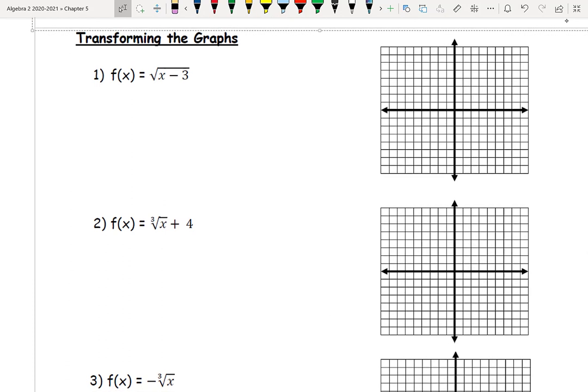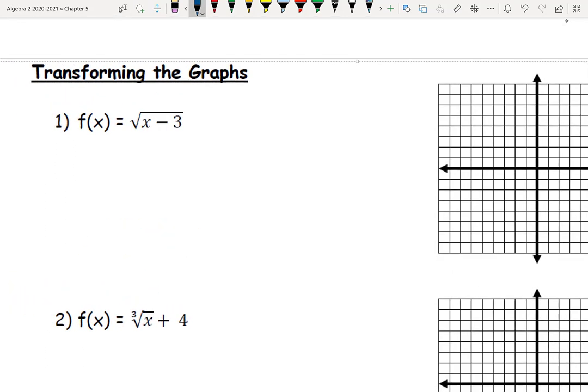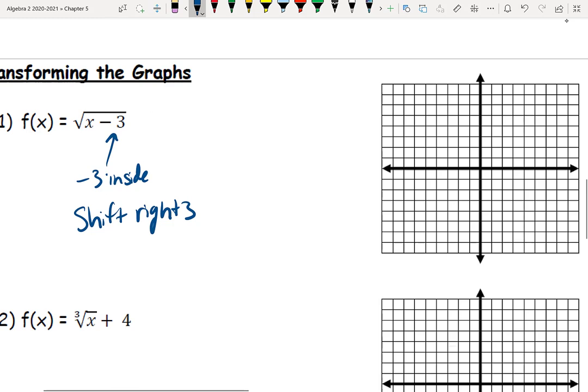So when we get into transformations, the same rules that we have talked about endlessly with all the different kinds of functions we've dealt with, they still follow the same rules with square root and cube root functions. If I'm dealing with the square root of (x-3), we have to remind ourselves that minus 3 on the inside is always left or right, and it's always opposite. So this is a shift right 3. I'm just going to take my standard graph for a square root and move it to the right 3.